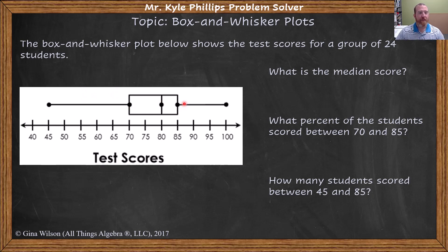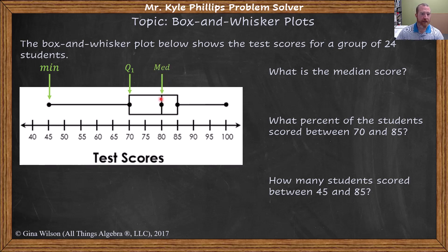Box plots are created with the five number summary. You have your minimum, then your first quartile, which makes the left side of the box, then the median, which is always going to be the vertical line drawn somewhere in the box. The right side edge of the box is your third quartile, and then you have your maximum. This is the five number summary.